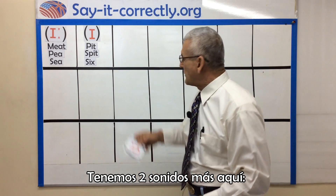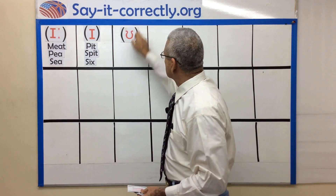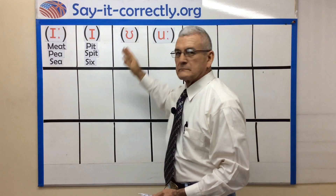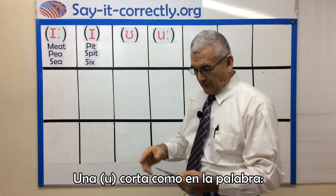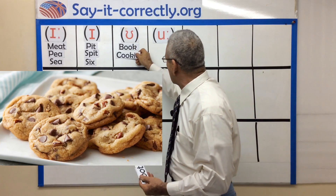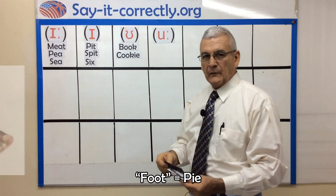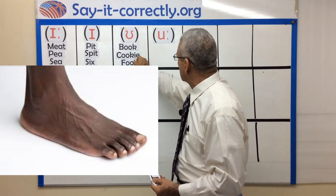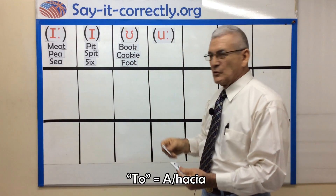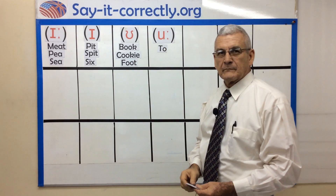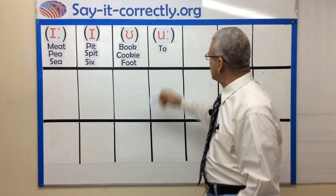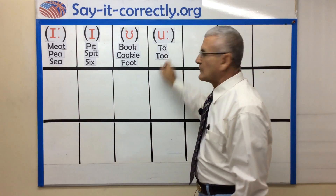We have two more sounds here. Short E, like in the word book, cookie, and food. And a longer sound here — two.